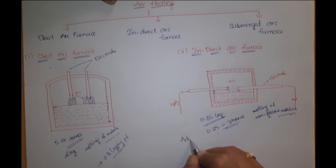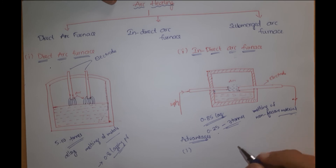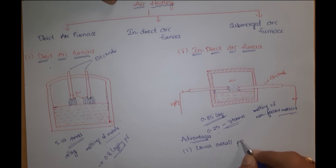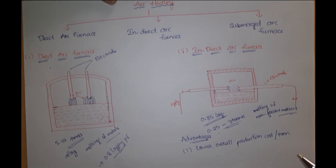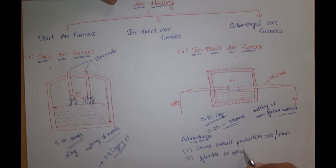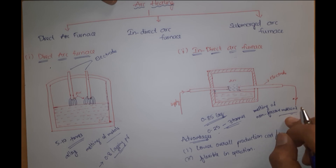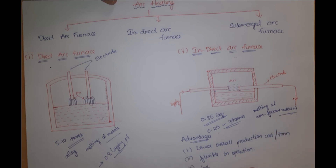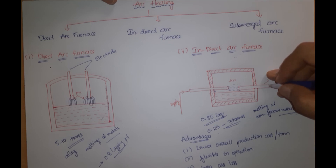The advantages of indirect arc furnace compared to direct arc furnace are: lower overall production cost per tonne, flexible in operation, and losses due to oxidation in indirect arc furnaces are low.